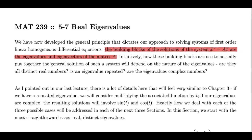Now, exactly how do we build the general solution from those building blocks? Well, that's going to depend on the nature of those eigenvalues. Intuitively, it makes sense that we'll have to treat eigenvalues differently if they're distinct real numbers, versus if we have a repeated eigenvalue, versus if we have complex eigenvalues. The good news is that we're quite familiar with these three cases, and the way we modify our techniques to accommodate each of these three possibilities will be very similar to Chapter 3.